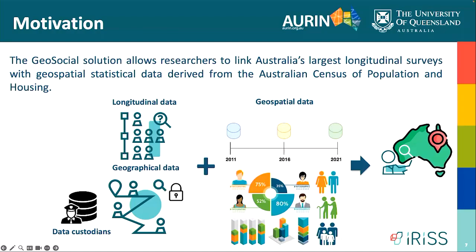We have longitudinal datasets observing the behavior of people in Australia over a couple of years, and we want to integrate this data with geographical data — for example, a dataset can have the postcodes of people and where they live. This geographical data contains sensitive information because nobody wants their address exposed. Data custodians have strong policies to protect sensitive data and don't give out postcodes freely. So when we want to do these integrations, we need to face some data custodians and some strong standards to protect people's privacy.